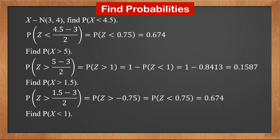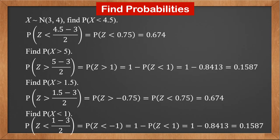Find P(X less than 1). By standardizing it, we get P(Z less than 1 minus 3 over 2), which is P(Z less than negative 1). It is equal to 1 minus P(Z less than 1). Therefore, the answer is 0.1587.